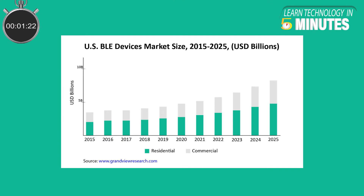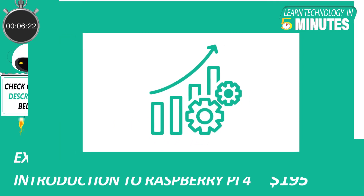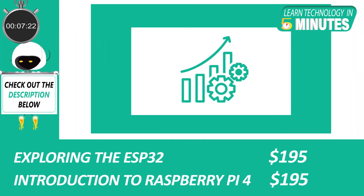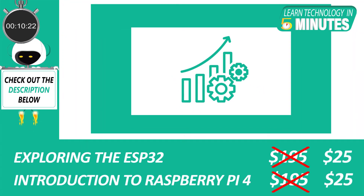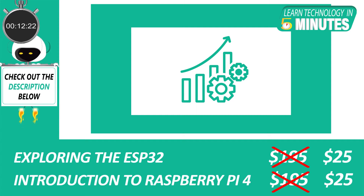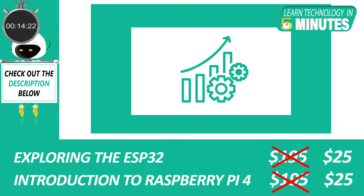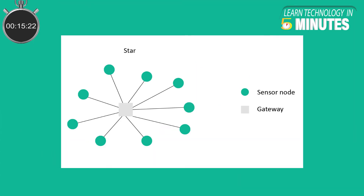The Bluetooth Low Energy market was estimated at $4.9 billion in the year 2020. This indicates that the popularity of BLE is growing rapidly among other wireless communication protocols in the IoT domain. The network connection style used in classic Bluetooth is a traditional point-to-point connection that looks like the hub-and-spoke model, known as a star topology.